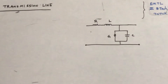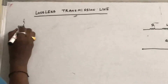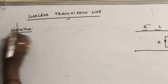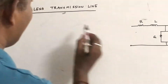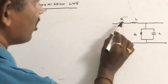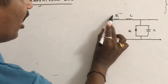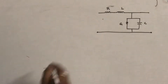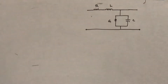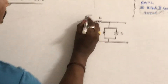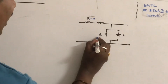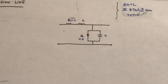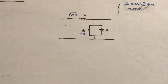So what is a lossless transmission line? Definition: a transmission line is said to be lossless if R is equal to 0 and G is equal to 0. This is a very simple definition — if R is equal to 0 and conductance G is equal to 0, then such a transmission line is said to be a lossless transmission line.